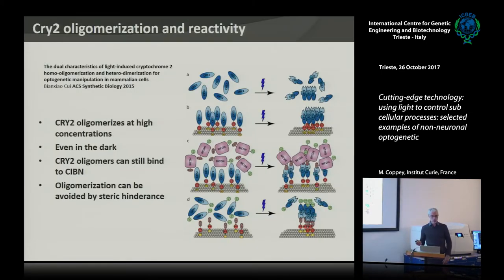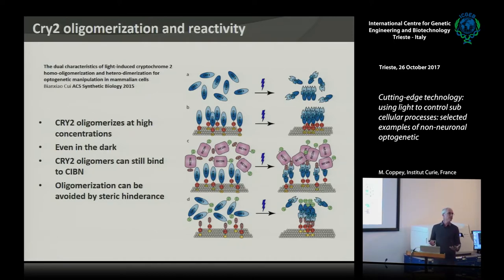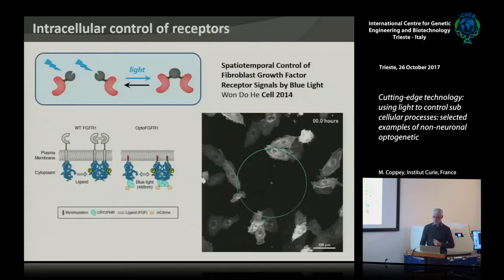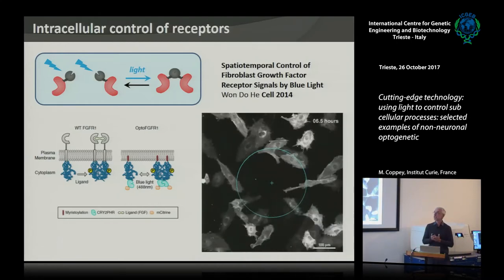This oligomerization is something you need to know about when working with CRY2, because cryptochrome 2 has a tendency to form oligomers — even a bit in the dark at high concentration, and triggered more strongly by light. There is a whole paper examining this oligomerization property. It can be problematic because you don't know how it controls your biological events. But you can actually use it to control processes that rely on oligomerization themselves — without needing a partner. One example I like a lot is FGFR activation via this oligomerization.